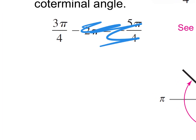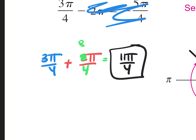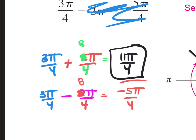Let's say we're given 3 pi over 4 and we want one positive and one negative coterminal. Adding 2 pi: common denominator is 4, so 2 pi becomes 8 pi over 4. What's 3 pi plus 8 pi? 11 pi over 4 — that's positive, so that's good. Now for a negative: 3 pi over 4 minus 2 pi. Common denominator is 4, so 2 pi becomes 8 pi over 4. What's 3 pi minus 8 pi? Negative 5 pi over 4 — that's a negative angle.